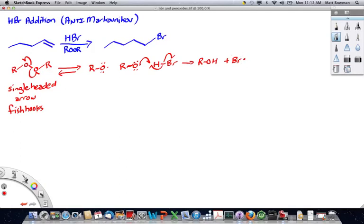Now, this bromine radical can go and find an alkene to add to. It adds to form the more stable radical it can.